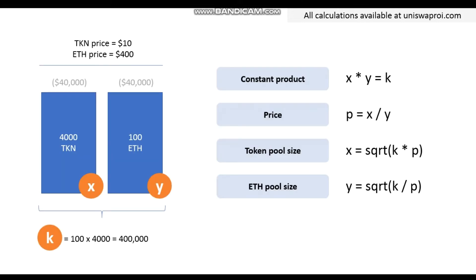Before diving in, just to remind you of the formula: the constant product X times Y equals K. The price is the ratio between the two — in this case, 10 divided by 400 equals 0.025. Given that the constant product is always constant, when the price changes, the pool size changes in this fashion: X is equal to the square root of K times the price, and Y is equal to the square root of K divided by the price.